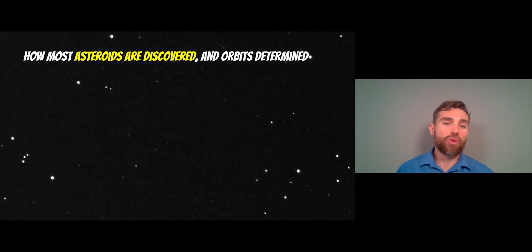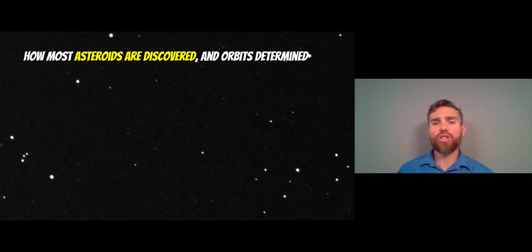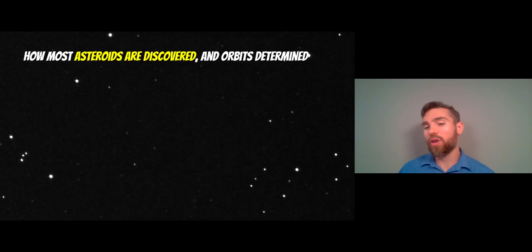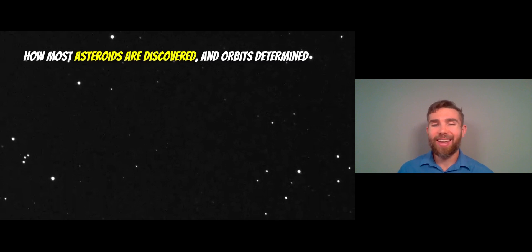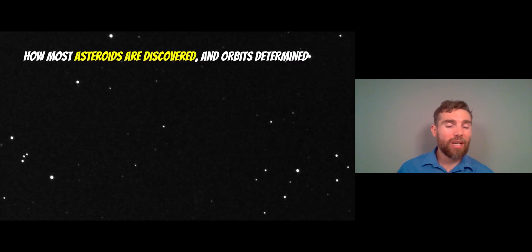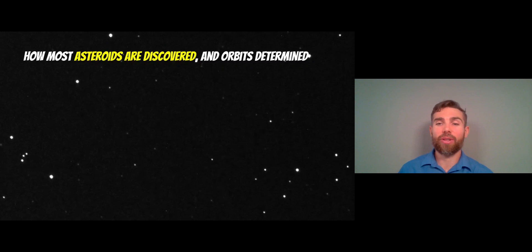And it's actually how most asteroids are discovered, and how their orbits are then determined. So what you do is you take an image, take another image, and then you kind of compare, is there any object moving in that frame. And asteroids typically move quite fast, so you don't need a huge amount of time between frames to start to see something moving across.